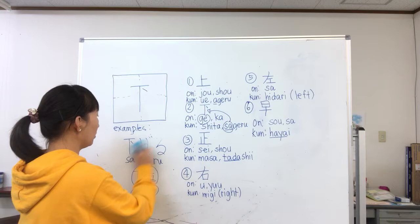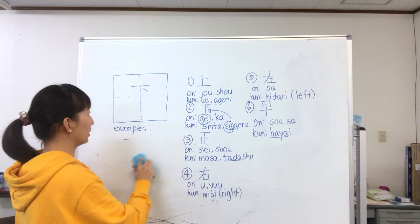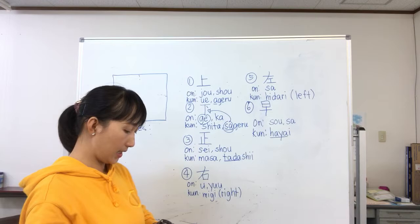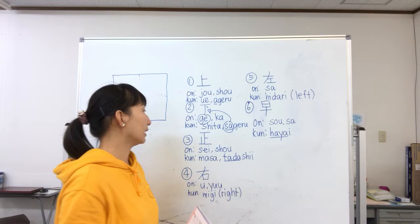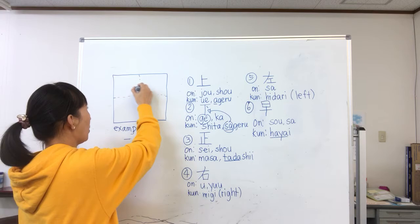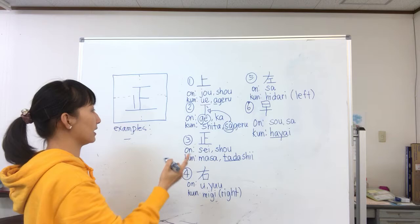Our third kanji is this one. Its onyomi are sei and shou, and its kunyomi are masa and tadashi. This is how you write it — one, two, three, four, five. So this is tada or masa.